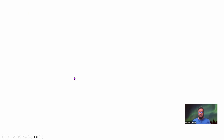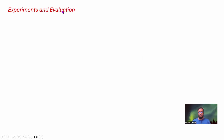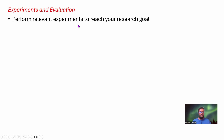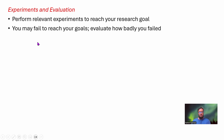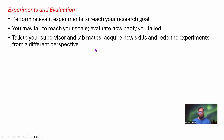Now you are at the core of the research — you've begun experiments and will be doing evaluation after finishing them. This will be a big, tedious process; it may take five months, ten months, a year, or two years depending on the research project. After doing everything, you may fail to reach your research goals, and you need to be able to evaluate how badly you failed — your supervisor will help with this. Talk to your supervisor and lab mates, acquire new skills if required, and probably redo the experiments from a different perspective.